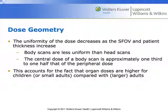Body scans are going to be less uniform because the body is essentially elliptical in shape when viewed in a transaxial plane. The central dose of a body scan will probably be about one-third of what it is at the skin. The head has a fairly uniform density and is more or less circular, so we see more or less equivalent doses across the surface of the skull and a very similar dose at the center.